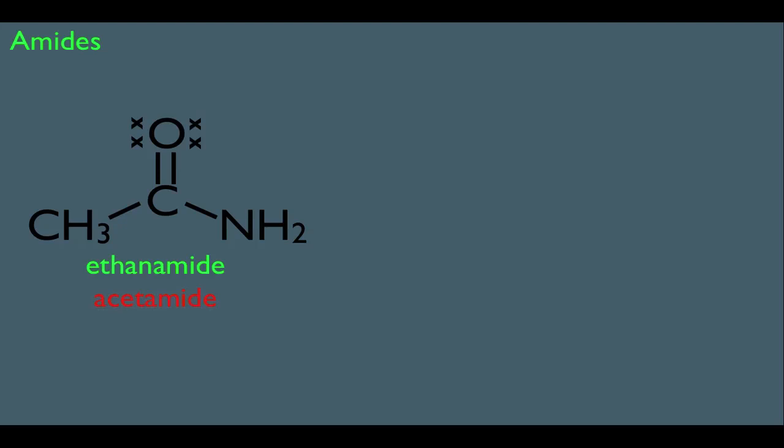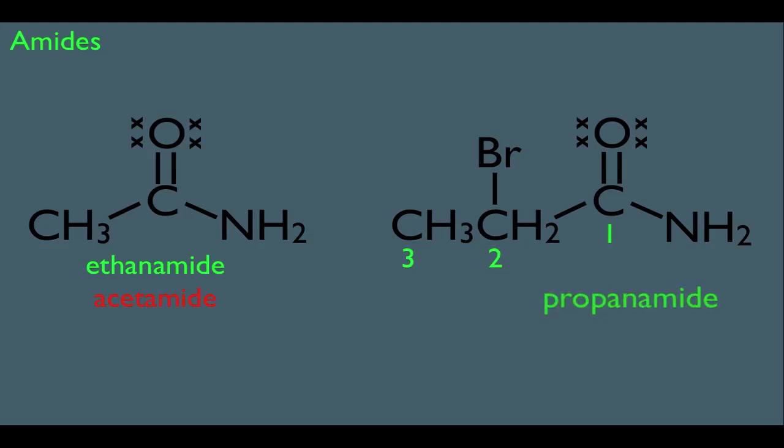We can even name amides that are substituted. For instance, like this example right here. Notice this is a 3-carbon amide. There are the carbons, 1, 2, 3. If it were an acid, it would be propanoic acid. But since it's an amide, we call it propanamide. And since we see that our amide has a Br on carbon 2, we would call this 2-bromopropanamide.